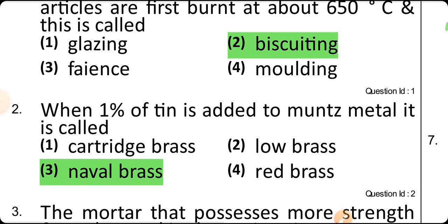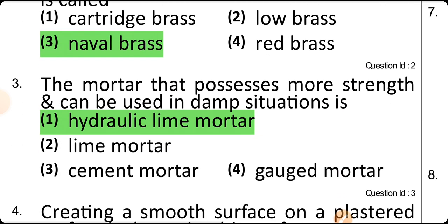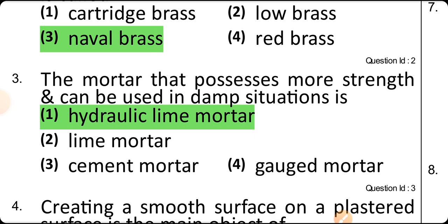When 1% of tin is added to moon's metal, it is called naval brass. The mortar that possesses more strength and can be used in damp situations is called hydraulic lime mortar.